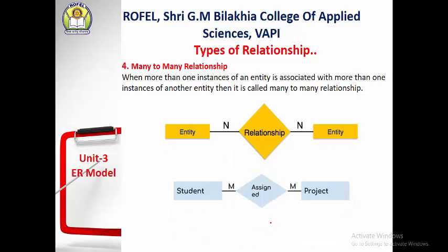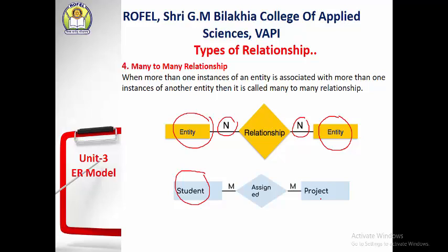The last relationship is many-to-many. This means more than one instance of an entity is associated with more than one instance of another entity. For example, many students can be assigned many projects — this is the many-to-many relationship.